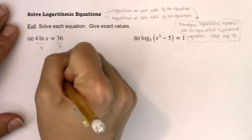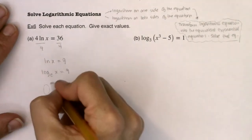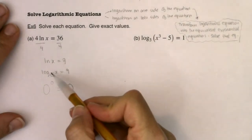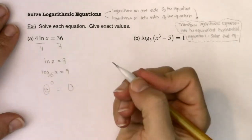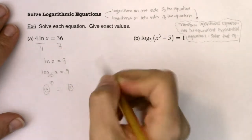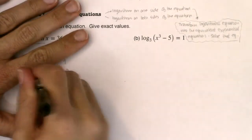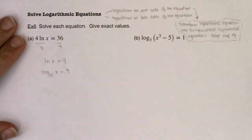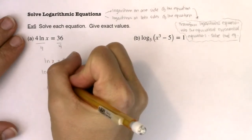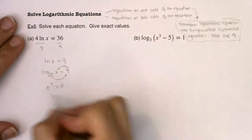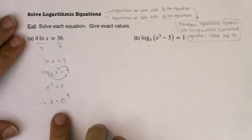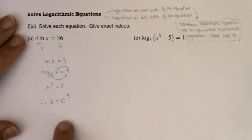Since it's ln, this is log base e of x equaling 9. Let's translate it into the equivalent exponential equation. The base of our logarithm is always the base of our power, and the logarithm equals the exponent, so we get e to the 9th equals x. That's my answer — x equals e to the 9th, and that is the exact value, not a decimal approximation.